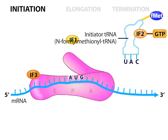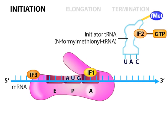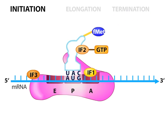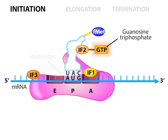IF1 binds to the small subunit at a location called the A site, where incoming tRNAs normally bind. The first tRNA, called N-formylmethionyl tRNA, thus enters another site called the P site. Note that the initiator tRNA has been escorted to the P site by IF2, which is bound to GTP, a high-energy molecule similar to ATP. The anticodon of the tRNA is complementary to the AUG start codon.